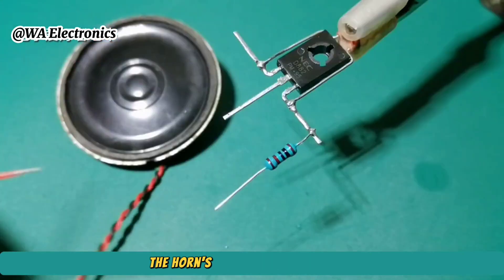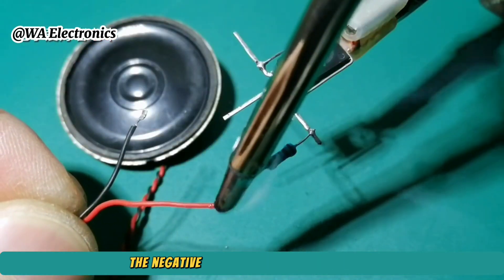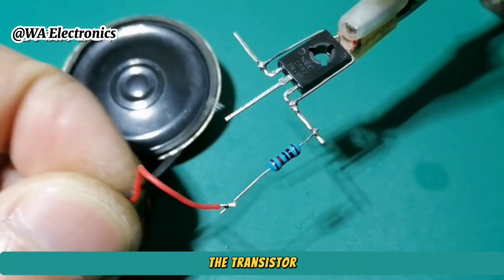Solder the positive of the horn speaker to the resistor. The negative is soldered to the emitter of the transistor.